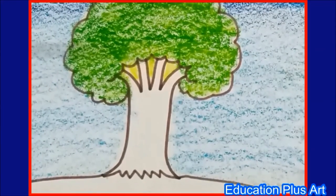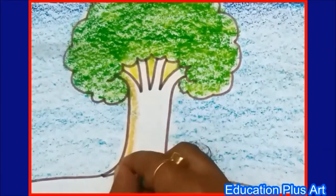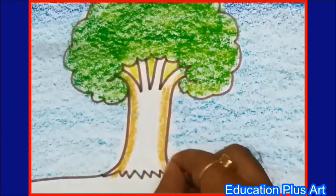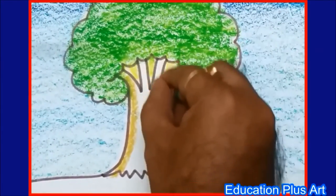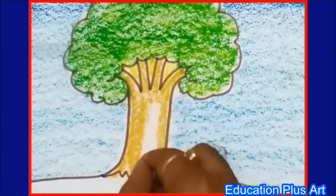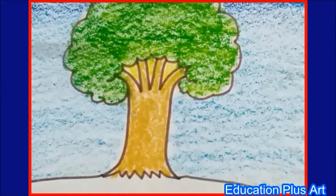Now I am going to take a light brown color for the branch. Cover the portion first. Fill inside. Here is my branch done.